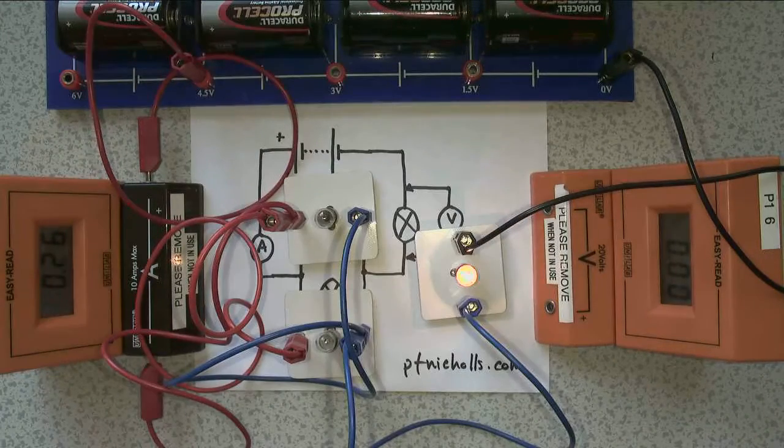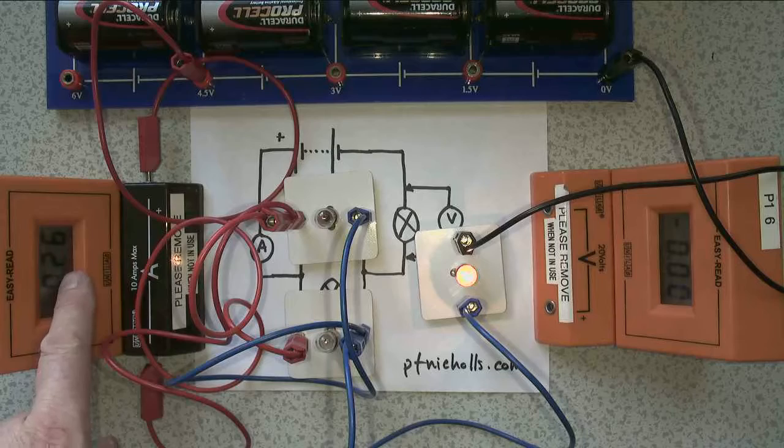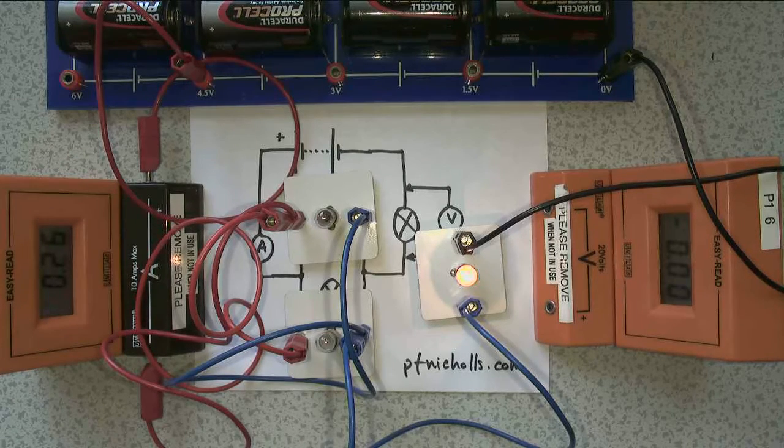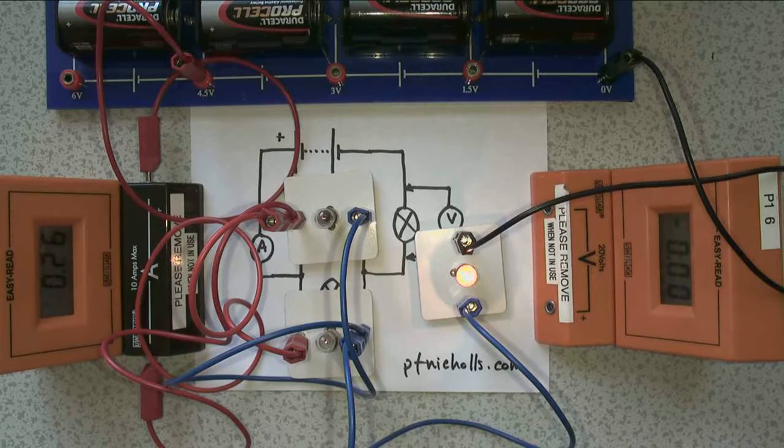And now, you'll see it's reading 0.26 amps, and it's in part of the circuit. So now I know that my circuit was working before I plugged the ammeter in. It's working after I plugged the ammeter in.